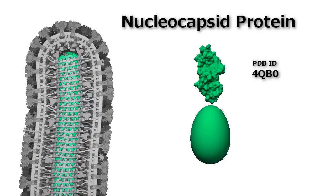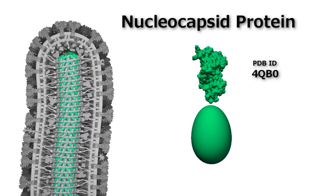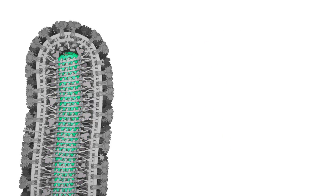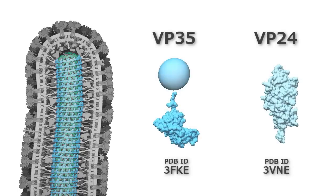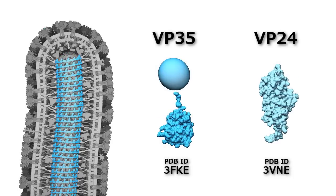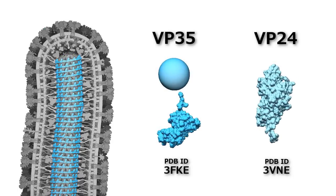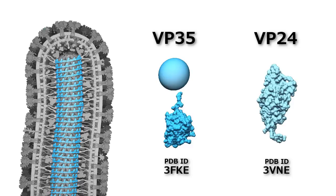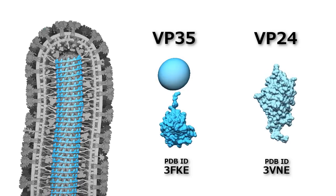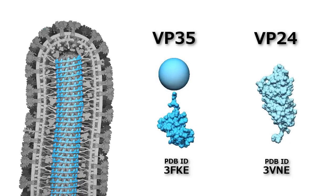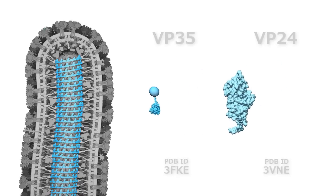The nucleocapsid protein binds viral RNA and wraps it up into a flexible rod. Proteins VP35 and VP24 each play dual roles, helping to suppress the host cell's immune response to the virus while also stabilizing the structure of the nucleocapsid rod.